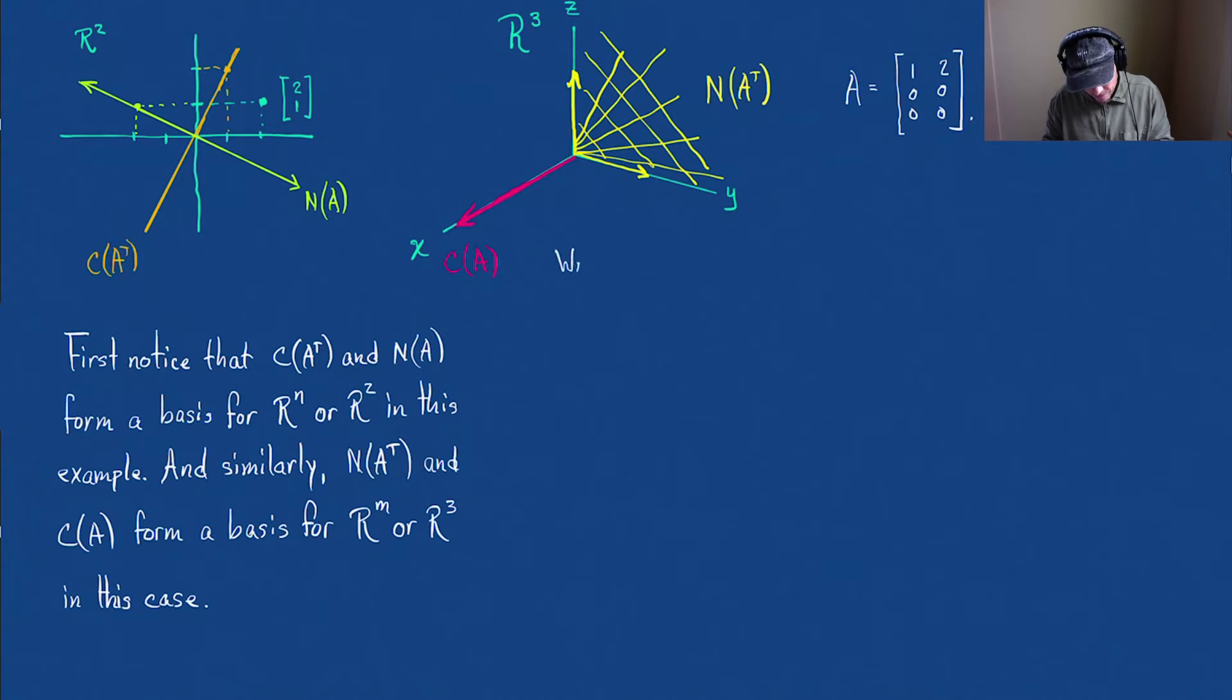as a linear combination of the basis for R^2. And remember, the basis is the column space and the null space. So in other words, X is going to equal some X vector from the row space plus some X vector from the null space. Let's see what we can do. Let's remember what they were. We said that X